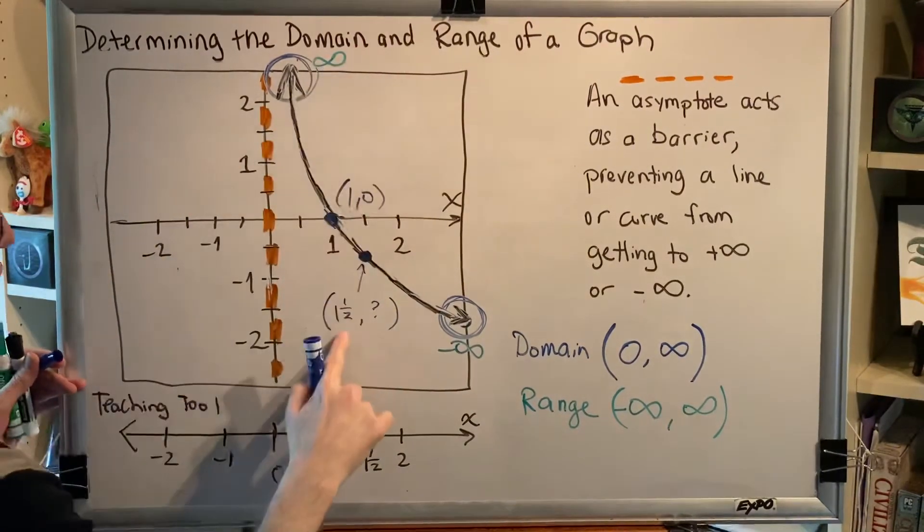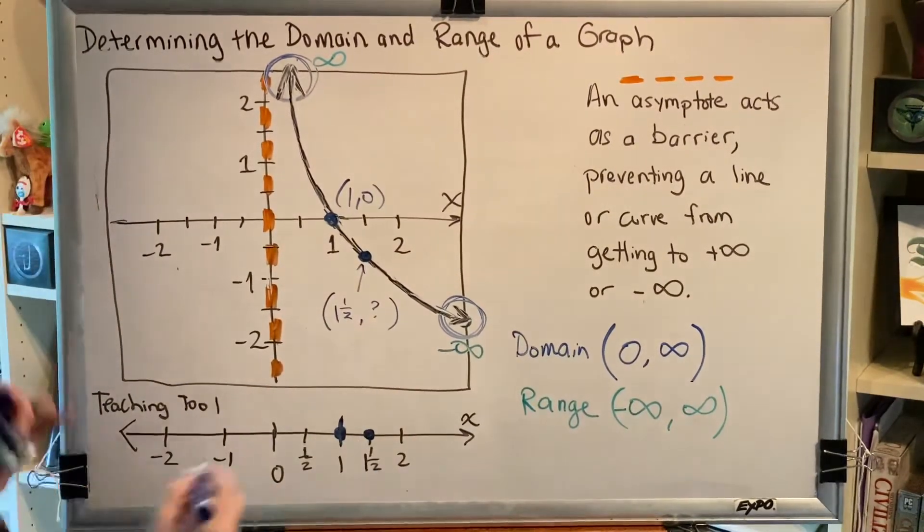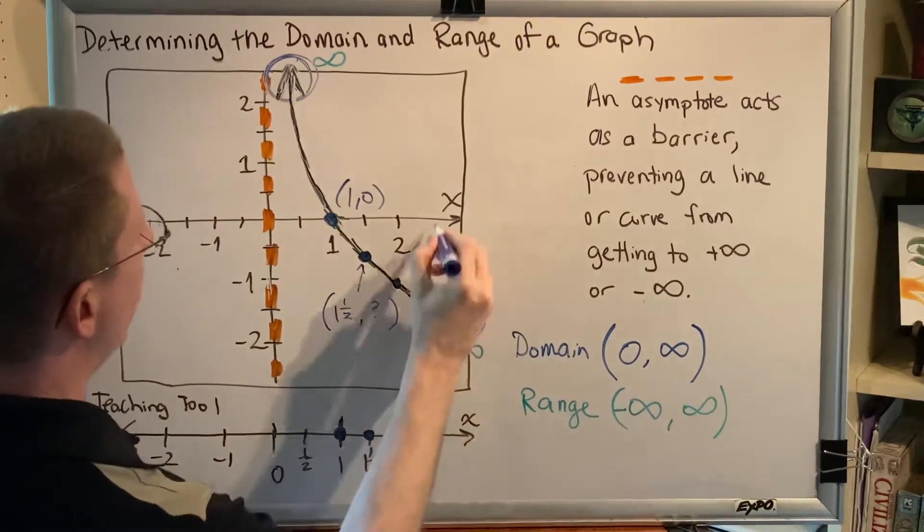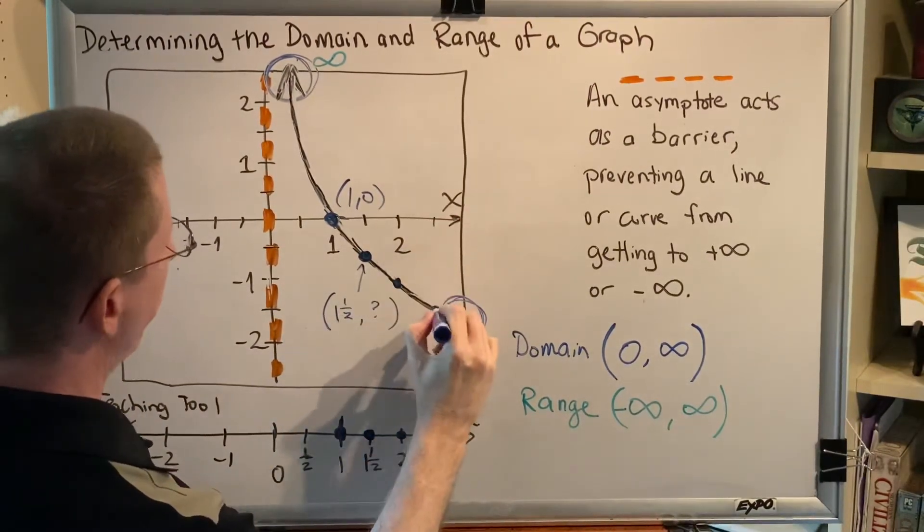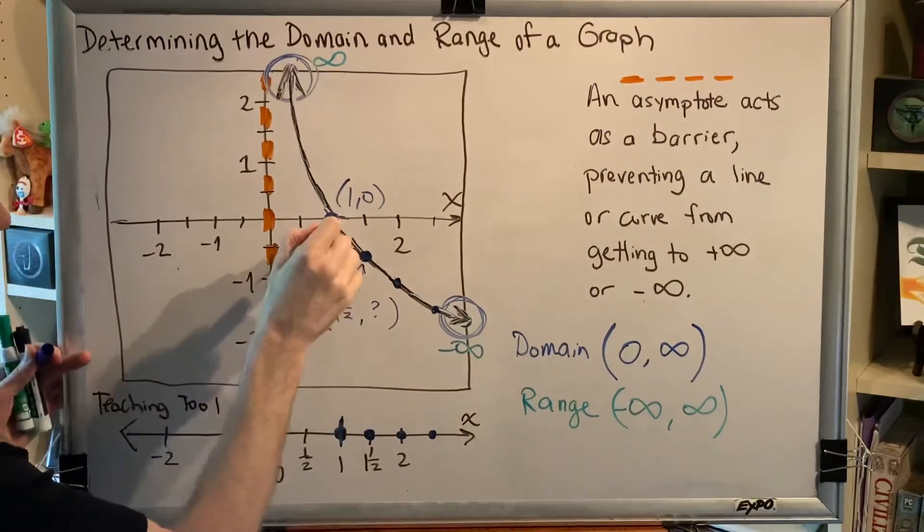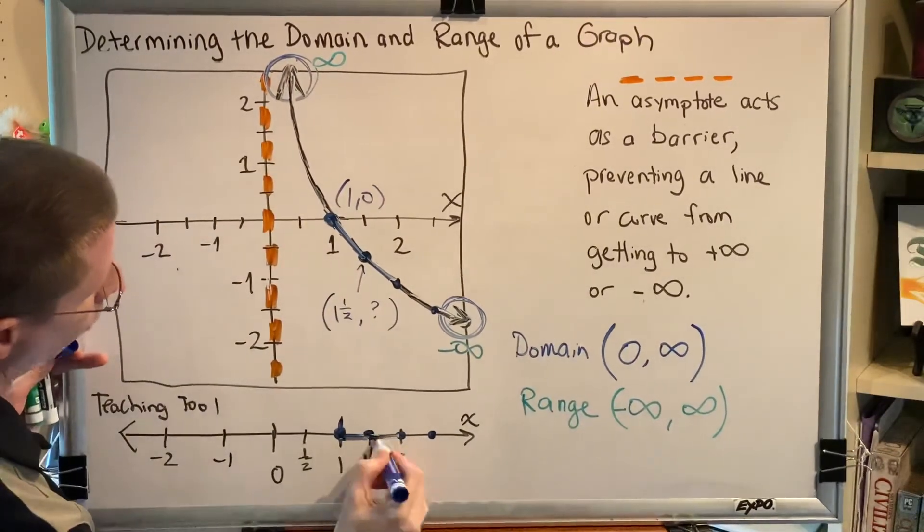So at one and a half I have an x coordinate, and at two I have an x coordinate, and at two and a half I have an x coordinate. And in fact, I have x coordinates between all of those values, so I would shade connecting all of these points.